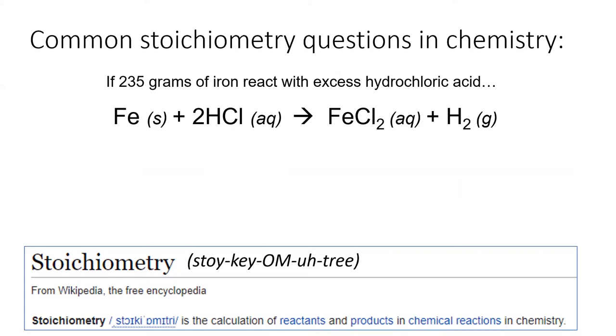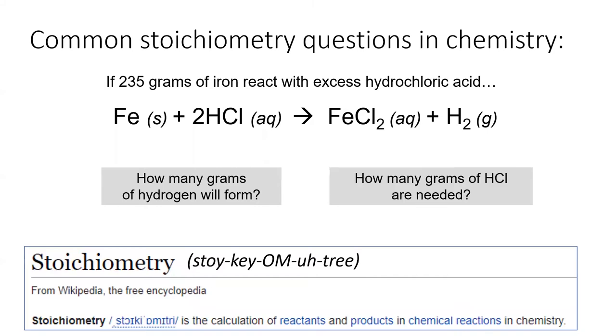For example, a chemist might want to mix iron metal and hydrochloric acid together to make hydrogen gas, according to the reaction shown. If this chemist has 235 grams of iron, she might want to know how many grams of hydrogen can I make? She might also want to know how many grams of hydrochloric acid will I need? Stoichiometry is the mathematical process used to answer these questions and more.